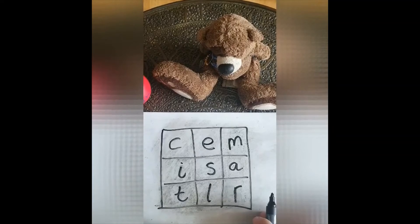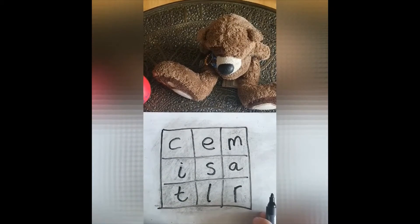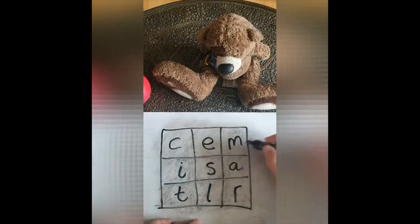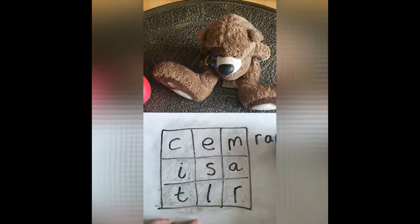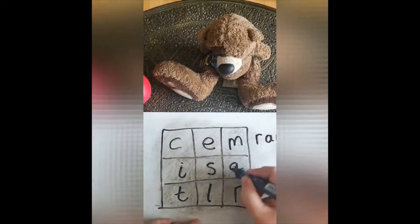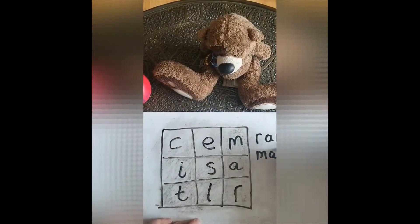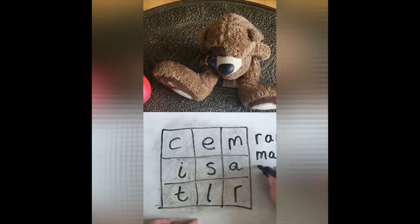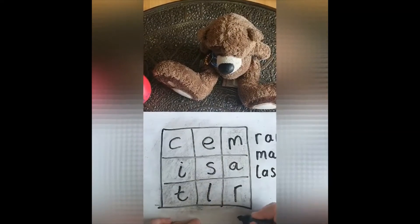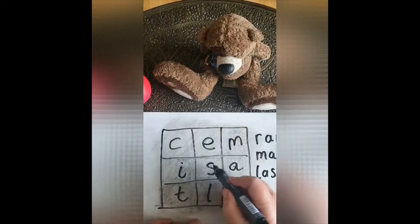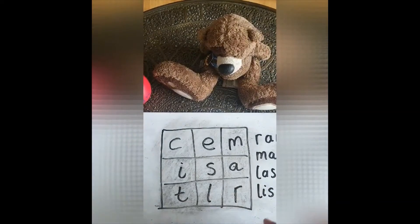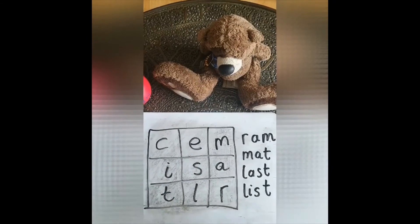Then you're setting a timer — 30 seconds, one minute, however long you want to give them — and saying, 'How many words can you find?' You're hoping that they will start to put words together, so they might get 'ram', they could find 'mat', they may find four-letter words like 'last' and 'list'. So you're just giving them a minute and then at the end of that minute looking at all the words that they have made.